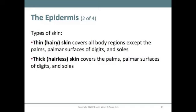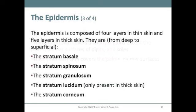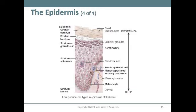There are two types of skin. Thin or hairy skin covers all body regions except the palms, palmar surfaces of the digits, and soles of the feet. Thick or hairless skin covers the palms, palmar surfaces of the digits, and soles of the feet. The epidermis has four layers in thin skin and five layers in thick skin: stratum basal, stratum spinosum, stratum granulosum, stratum lucidum, and stratum corneum — with the stratum lucidum present only in thick skin.